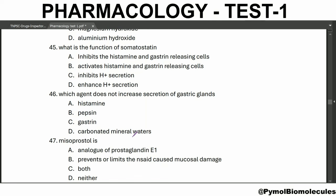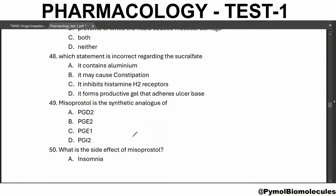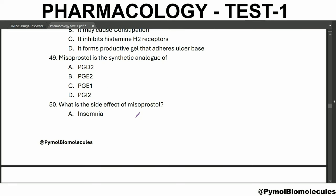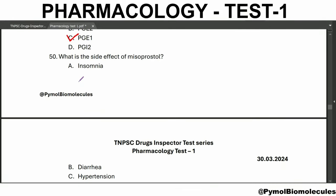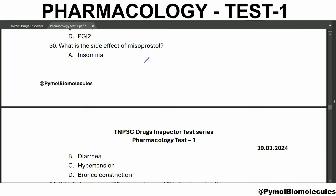Which agent does not increase secretion of gastric glands? Pepsin. Misoprostol is an analog of prostaglandin E1 and prevents or limits the NSAID-caused mucosal damage. Which statement is incorrect regarding sucralfate? It inhibits H2 receptors — this is incorrect; sucralfate is a cytoprotective agent. Misoprostol is the synthetic analog of PGE1. What is the side effect of misoprostol? Misoprostol is used in NSAID-induced gastric ulcer.